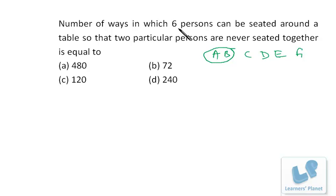If six persons are sitting around a table, that means it is a circular arrangement. In circular arrangement, the total number of ways of arranging n people is n minus 1 factorial. So the total number of arrangements will be...